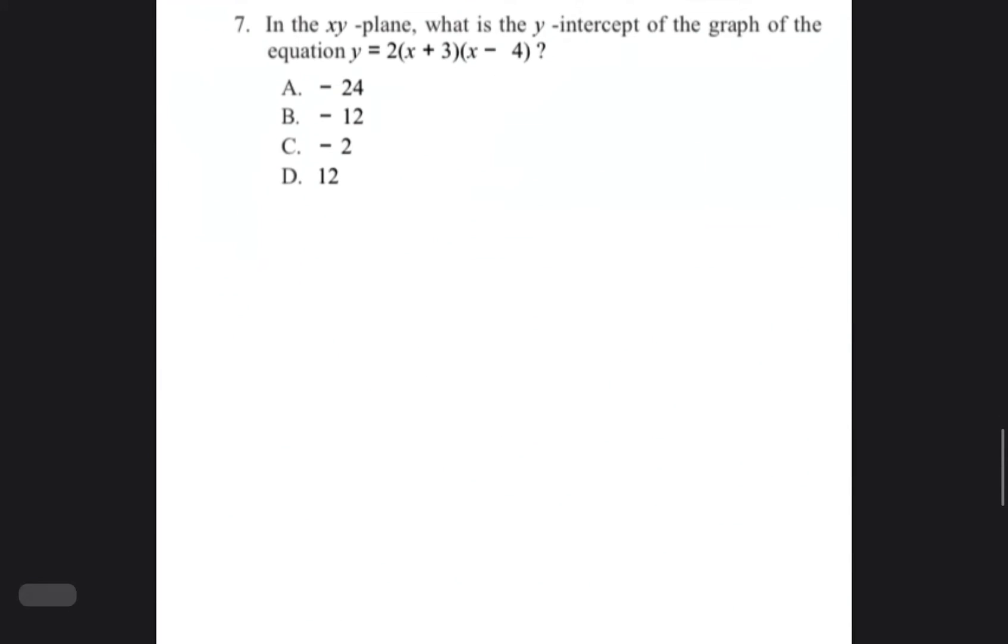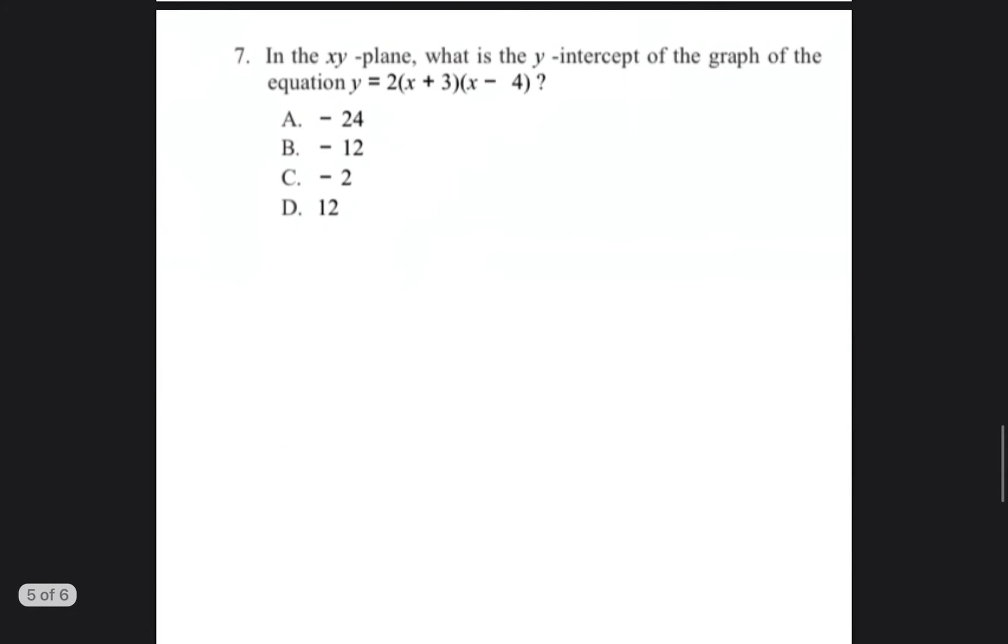Let's go to problem number 7. It says, in the xy plane, what is the y-intercept of the graph of the equation y equals 2 times x plus 3, times x minus 4? So y-intercept is a point. You can write it as x comma y. But when you're talking about the y-intercept, the x is always going to be 0, and then there's going to be some value for y.